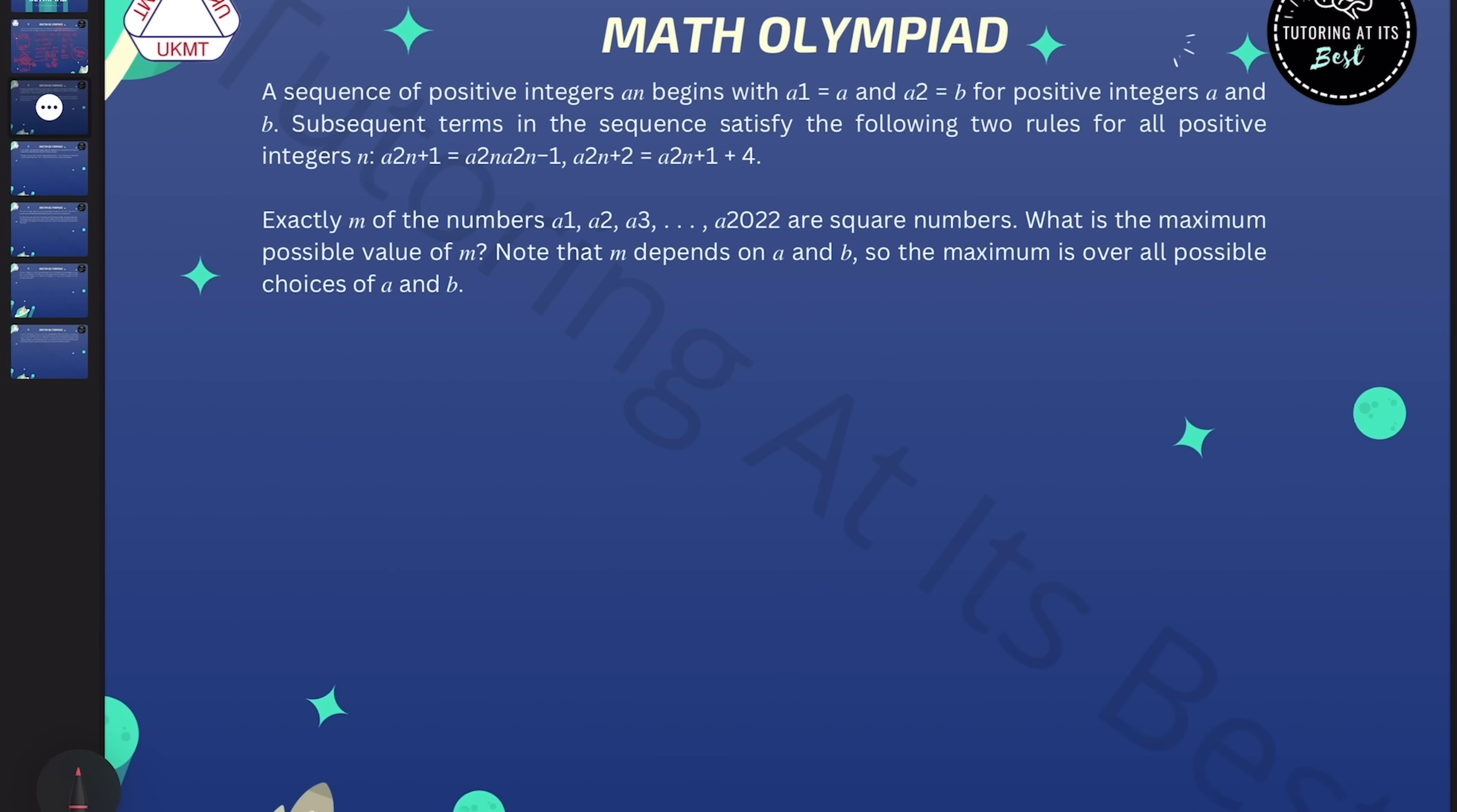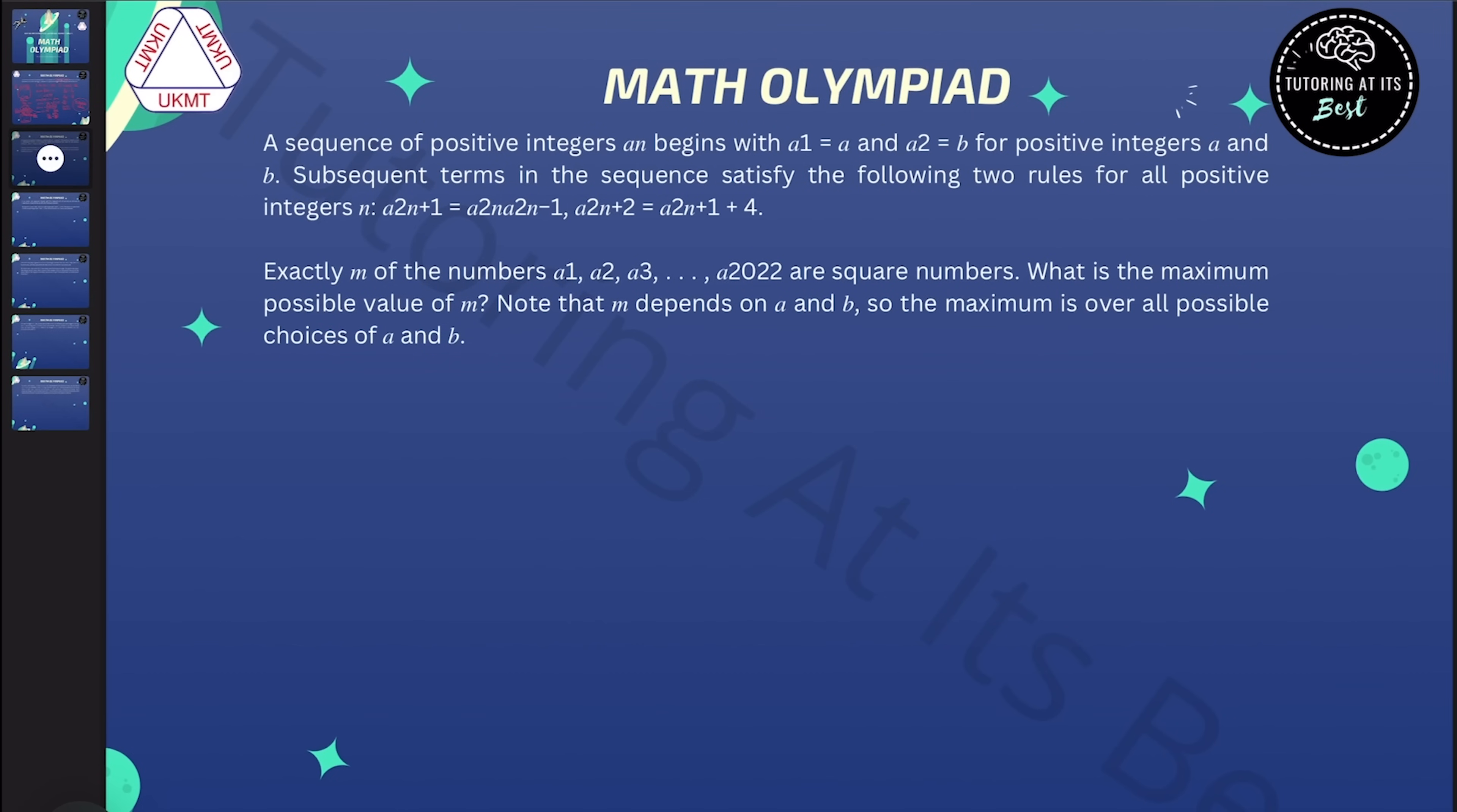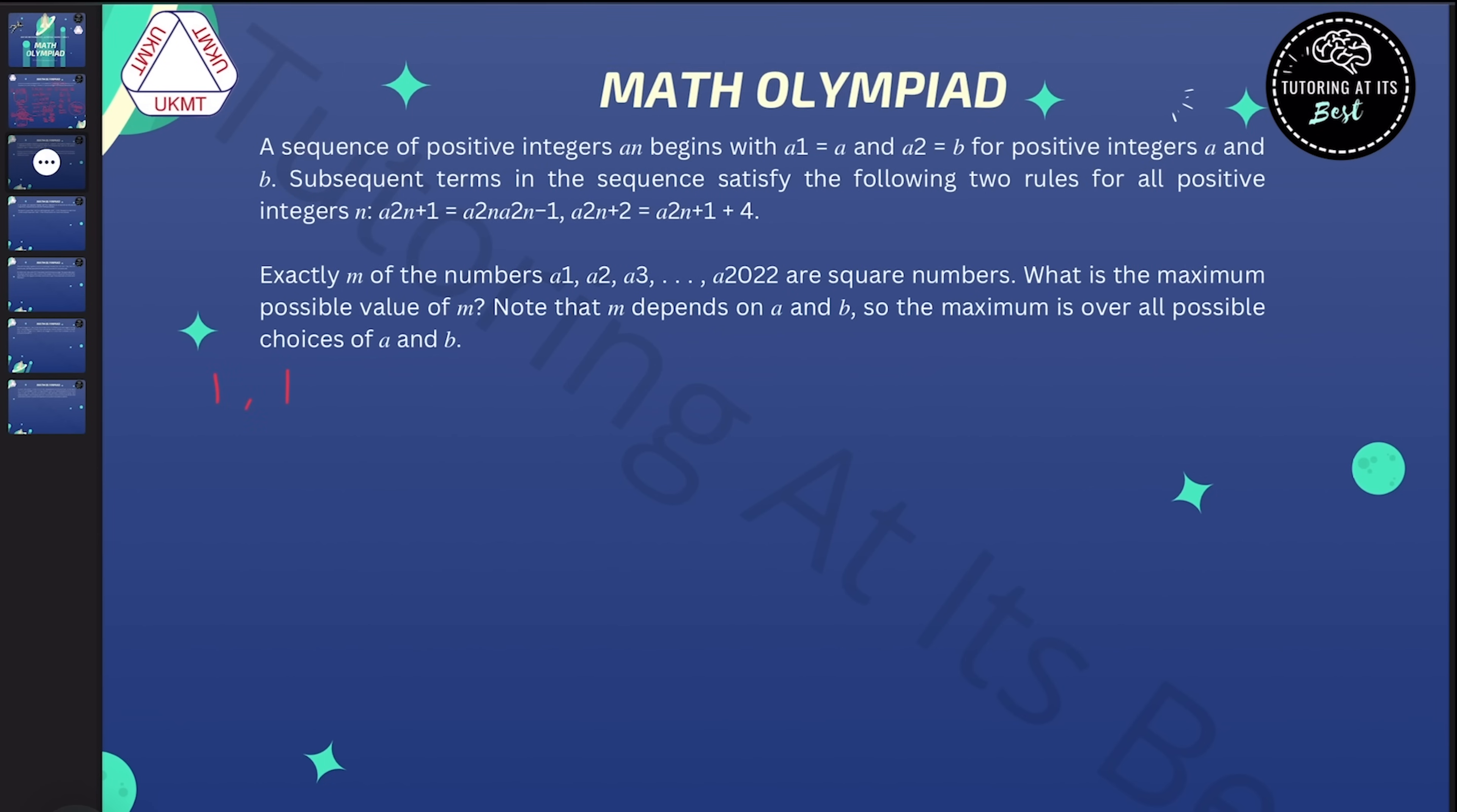It's quite hard to see what we're formally going to do here. So I'm going to start off by choosing some values of a and b and working out some terms of the sequence. I'm also worried that the multiplication is going to cause terms to get large really quickly, so I'm going to start by taking a and b as small as I can. We'll take that as 1 and 1.